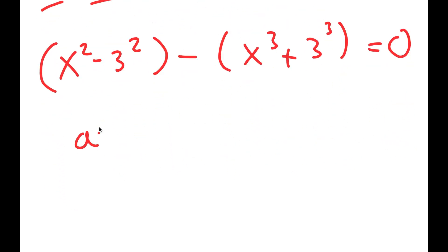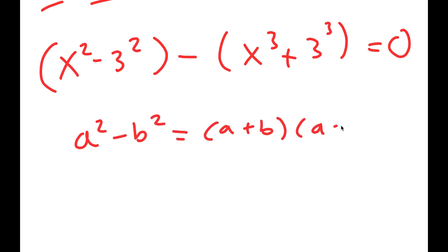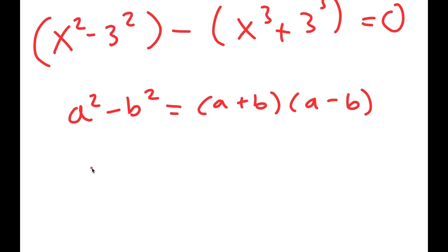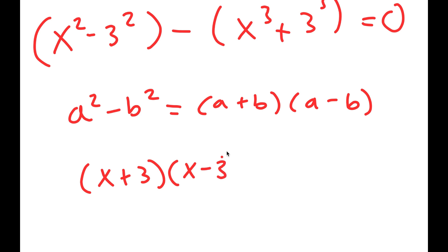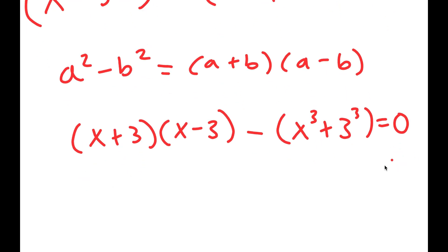Using the difference of squares identity — a squared minus b squared equals (a + b)(a - b) — I get (x + 3)(x - 3) minus (x cubed plus 3 cubed) is equal to 0.